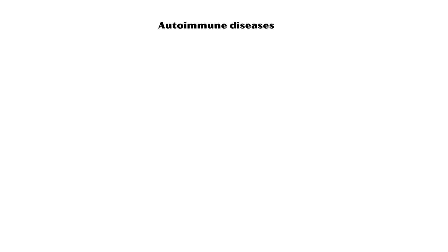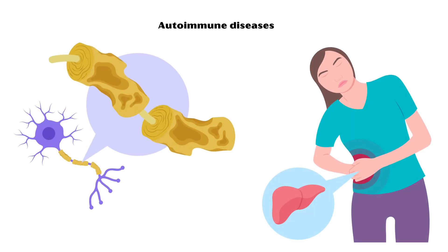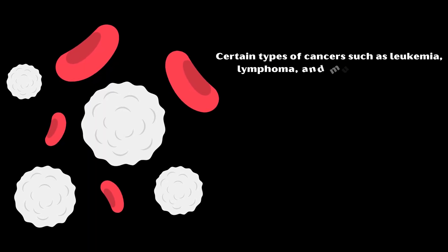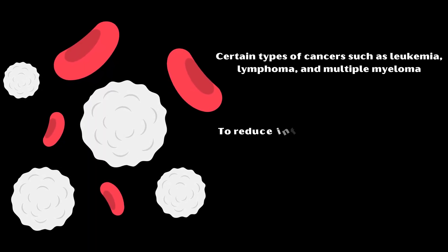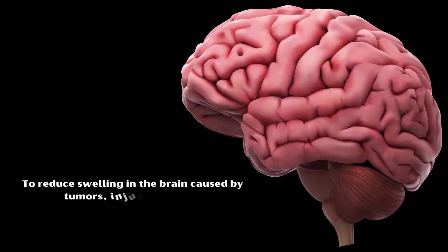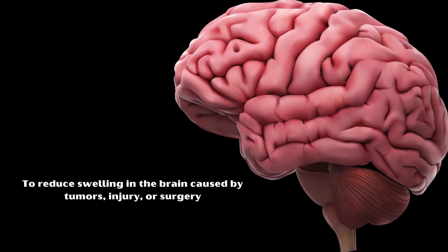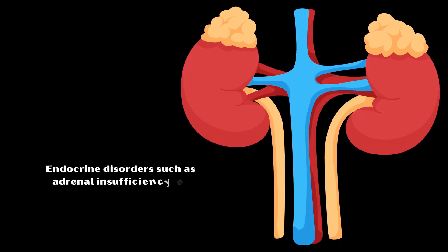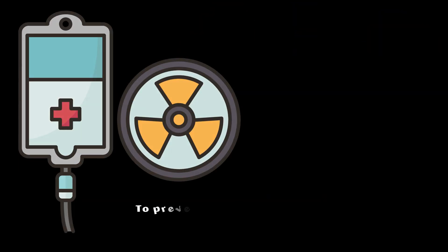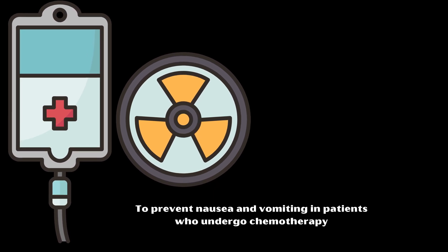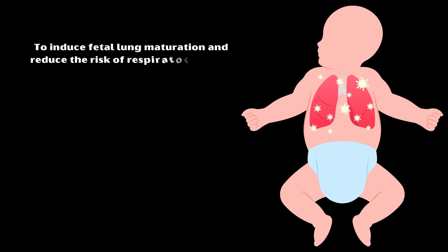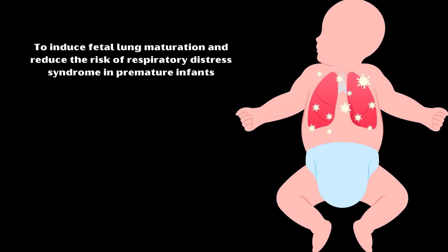Autoimmune diseases like multiple sclerosis and autoimmune hepatitis. Certain types of cancers, such as leukemia, lymphoma, and multiple myeloma, to reduce inflammation and suppress the immune response. To reduce swelling in the brain caused by tumors, injury, or surgery. Endocrine disorders such as adrenal insufficiency and congenital adrenal hyperplasia. To prevent nausea and vomiting in patients who undergo chemotherapy, and to induce fetal lung maturation and reduce the risk of respiratory distress syndrome in premature infants.